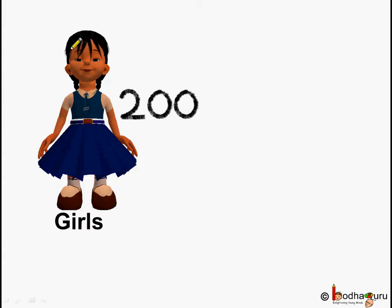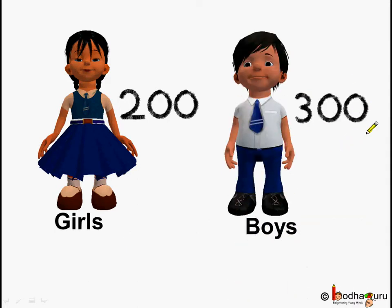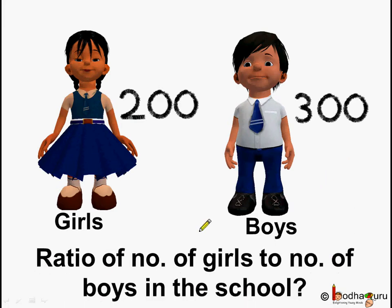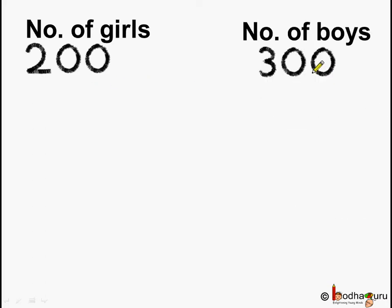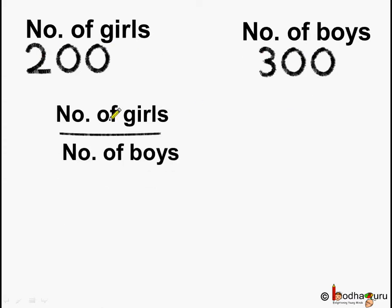In a school there are 200 girls and 300 boys. So what is the ratio of the number of girls to the number of boys? To find this ratio we divide the number of girls by the number of boys.